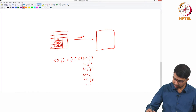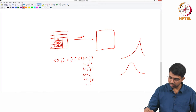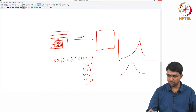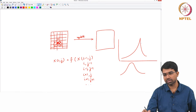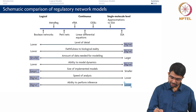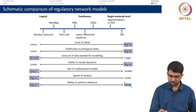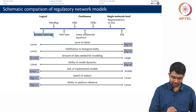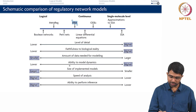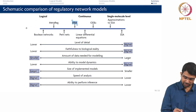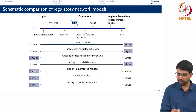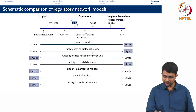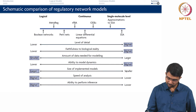You will have a distribution of molecules — say, number of molecules bound to a transcription factor — and you can figure out the most likely state. This slide tells you according to several axes: level of detail, faithfulness to biological reality, amount of data needed. It is easier to build Boolean networks — you do not need too much data. RFBA and similar approaches are somewhere in the middle. Continuous ODE models are powerful but you are limited by the size of models you can build.